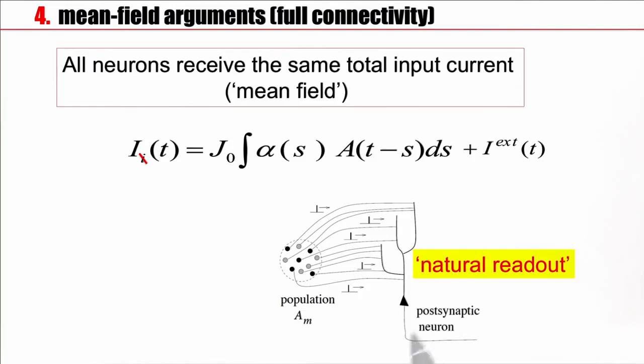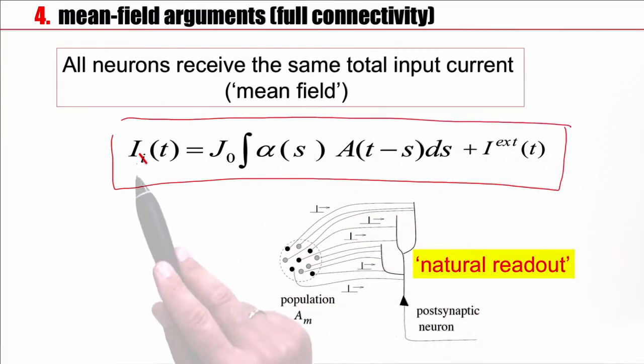Importantly, we said at the beginning that the population activity provides natural readout. A post-synaptic neuron, a receiving neuron, actually samples the activity of a whole population. While this was an intuition before, this has now become a precise statement. The input to neuron i or any other neuron is driven by the population activity. This is time-dependent input coming from the network, the synaptic input. In addition, this whole population may also receive external input, which could also be time-dependent.